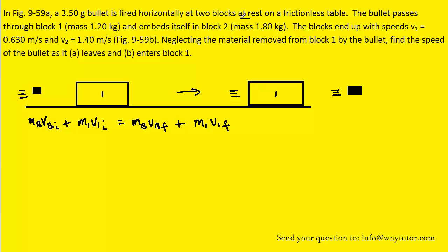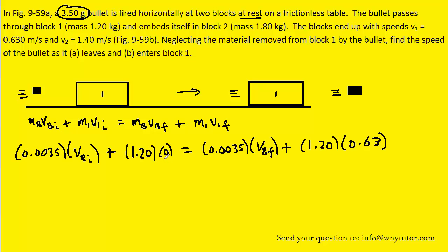We will also notice that box 1 begins at rest, so its initial velocity is 0. With that in mind, let's plug in the known values, and also make sure to convert grams into kilograms, the standard unit of mass. Again, note that the initial velocity of box 1 was 0, and that I converted the mass of the bullet from grams into kilograms. We can simplify the equation a little bit by canceling this term and multiplying out these two numbers.